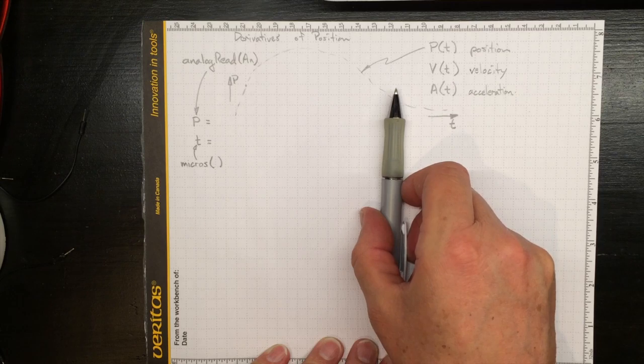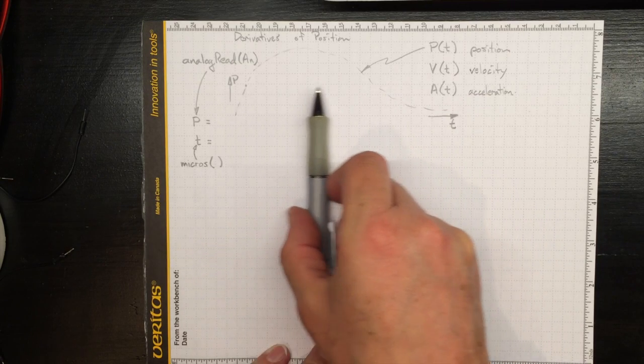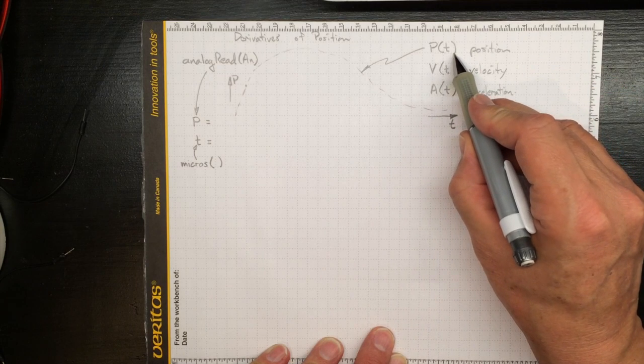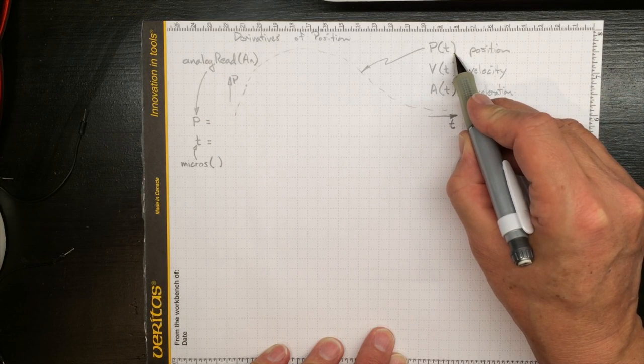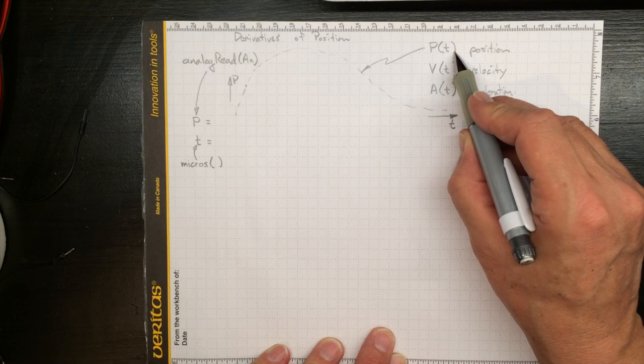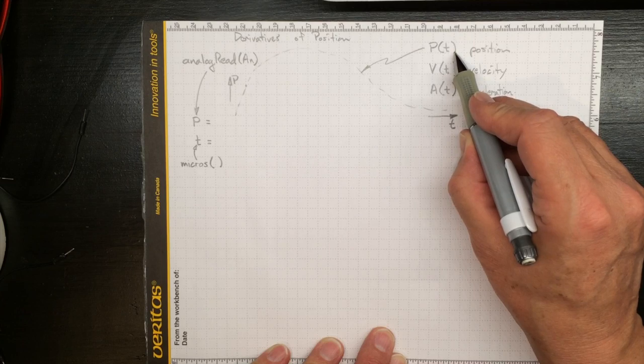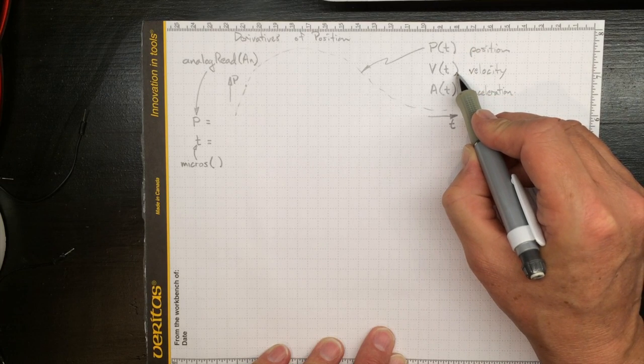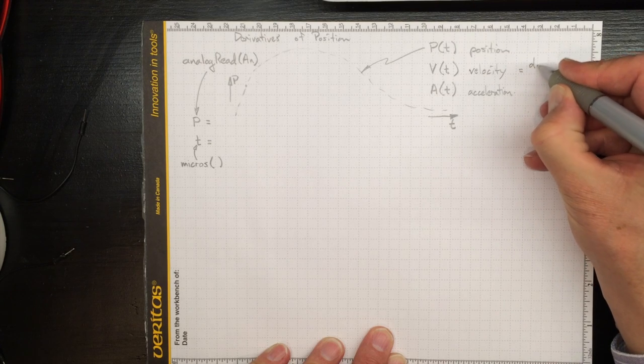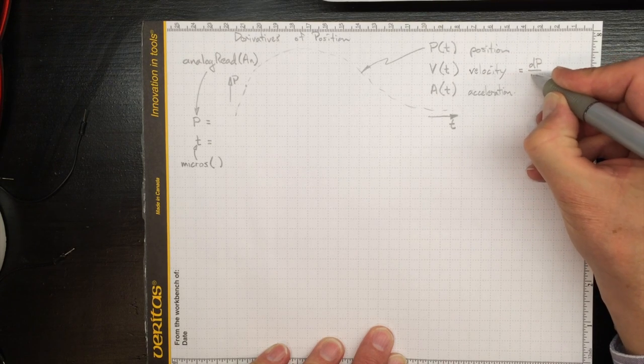And this pen, it'll always have a position. We may not know what it is. So the position as a function of time exists. If we knew what it was, we could use analytical calculus to find out what the velocity was. Because the velocity is just the derivative of position with time.